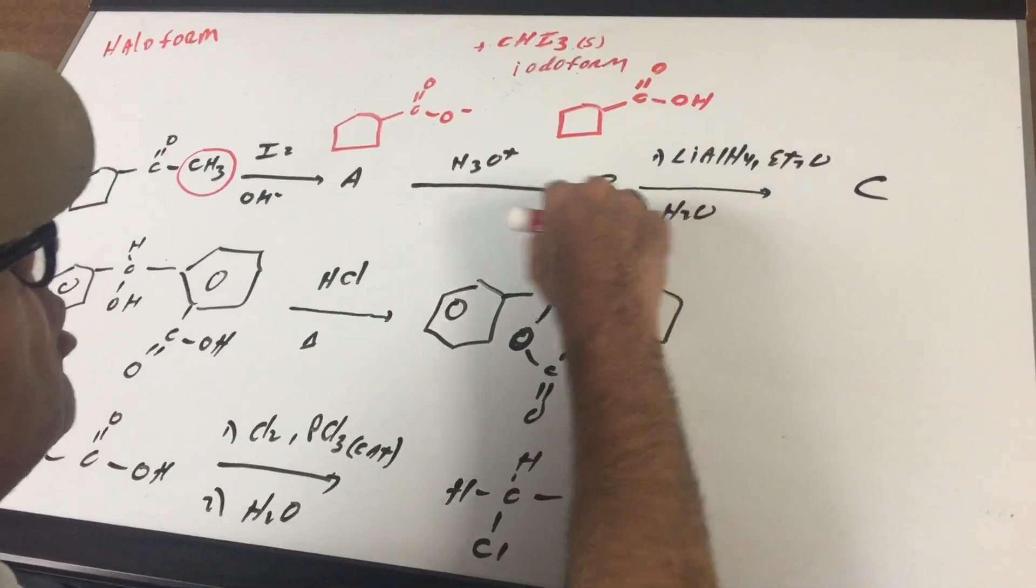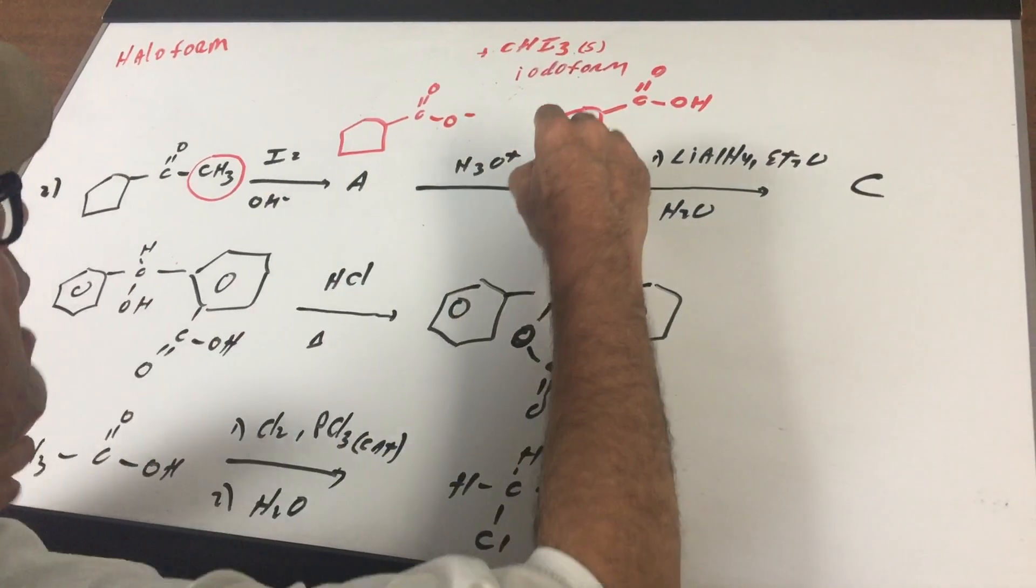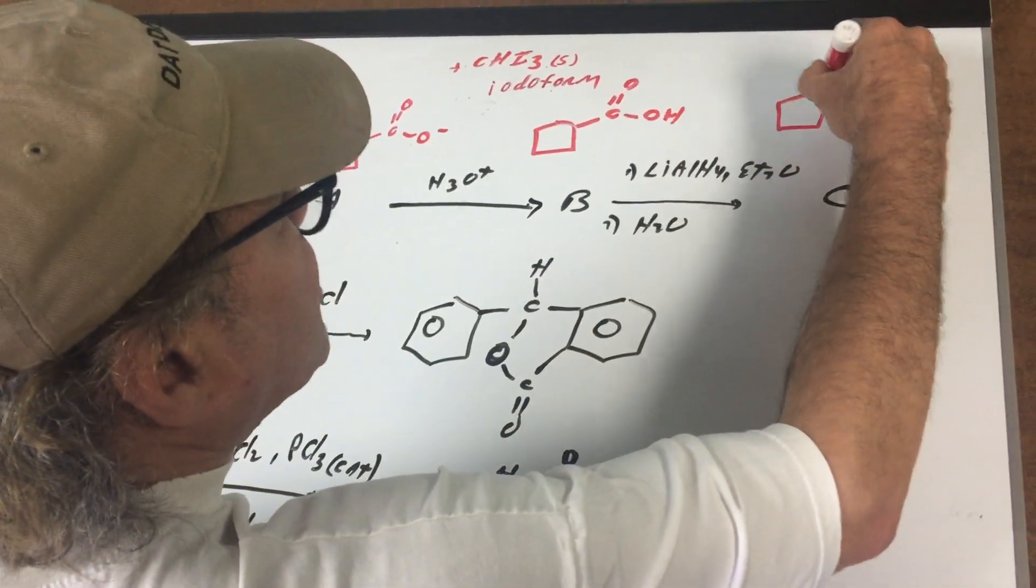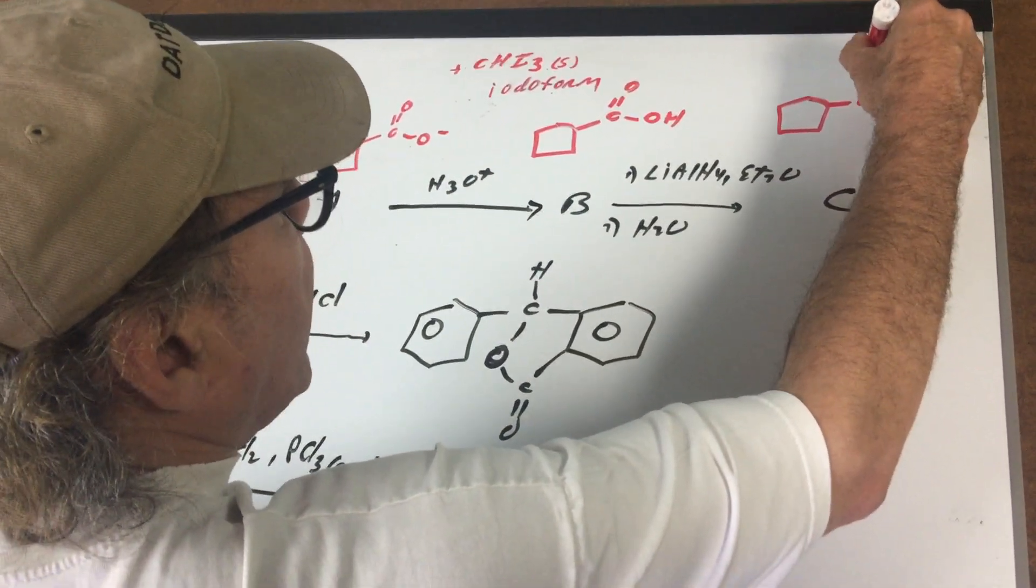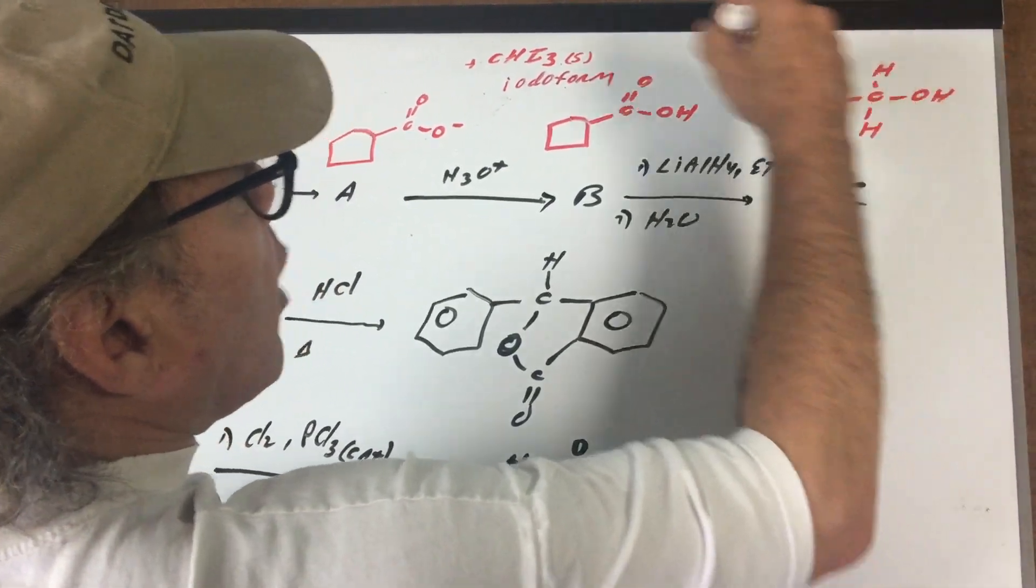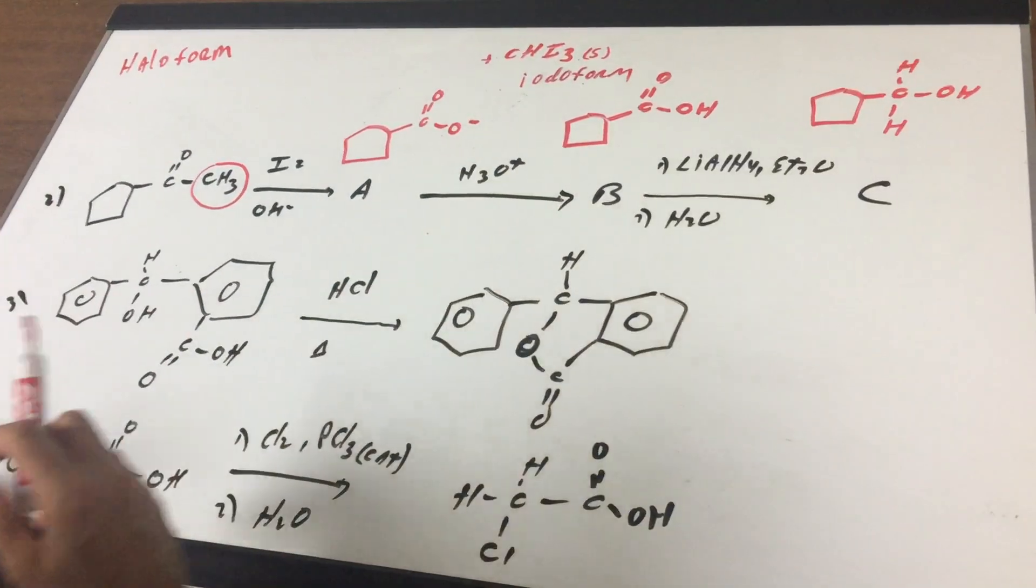And then I added another little twist on here. What I did here was I want to reduce it. Now whenever you reduce an acid we usually use lithium aluminum hydride, and that will reduce down into a primary alcohol. You add H's. So you can almost envision if you got rid of the carbonyl and added H's on. So you end up with the alcohol.